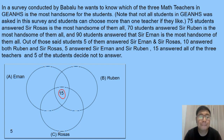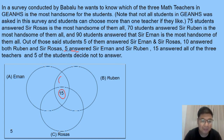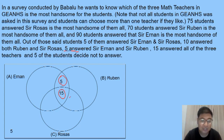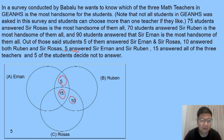After that, five answered Sir Ernan and Sir Ruben, so we place 5 at the intersection of Sir Ernan and Sir Ruben. Then ten answered both Sir Ruben and Sir Rosas — we place 10 at their intersection. And five of them answered Sir Ernan and Sir Rosas, so we place 5 there.